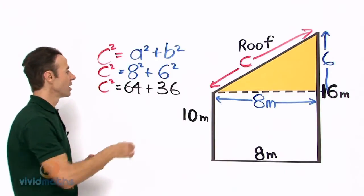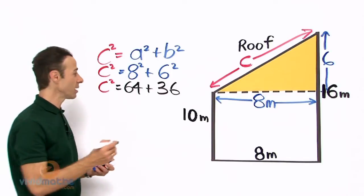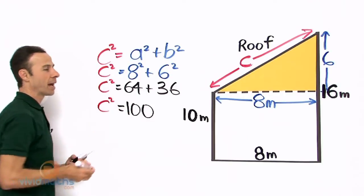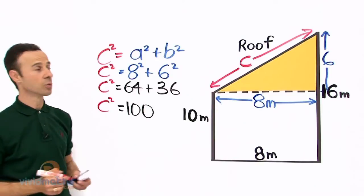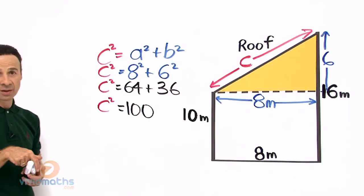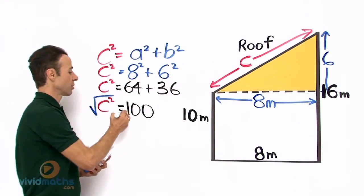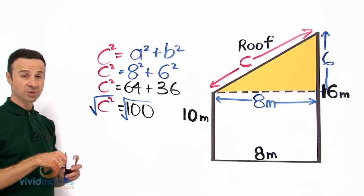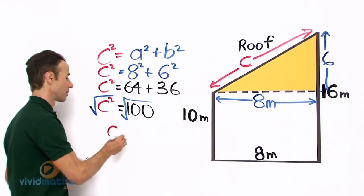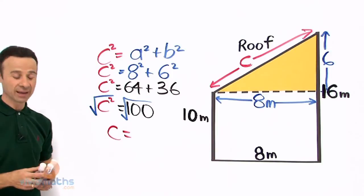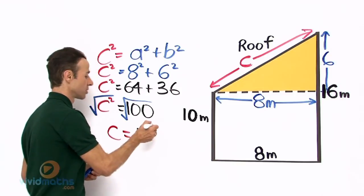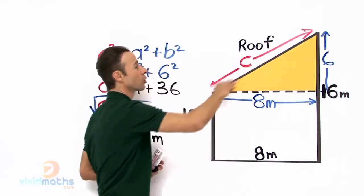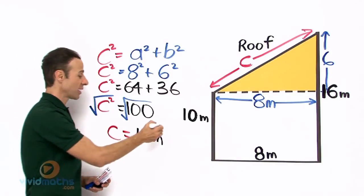C squared equals 64 plus 36. Let us add them together — 64 and 36 gives us 100. Now to turn C squared into C, which is the length of the roof, we need to square root both sides. The square root of C squared reverts back to just C. C equals the square root of 100, which is 10. So the length of the roof, which is C, equals 10 meters.